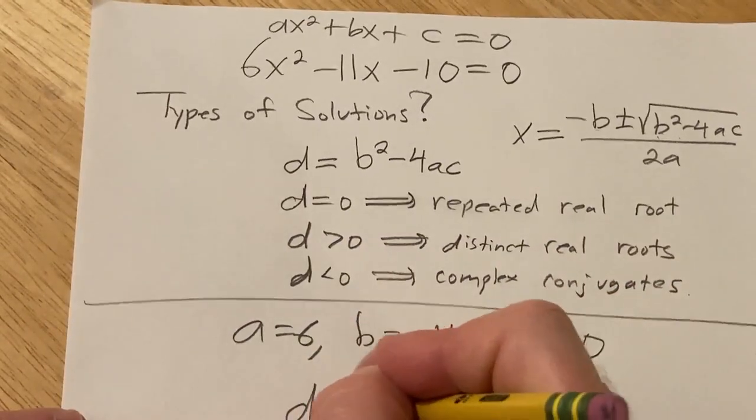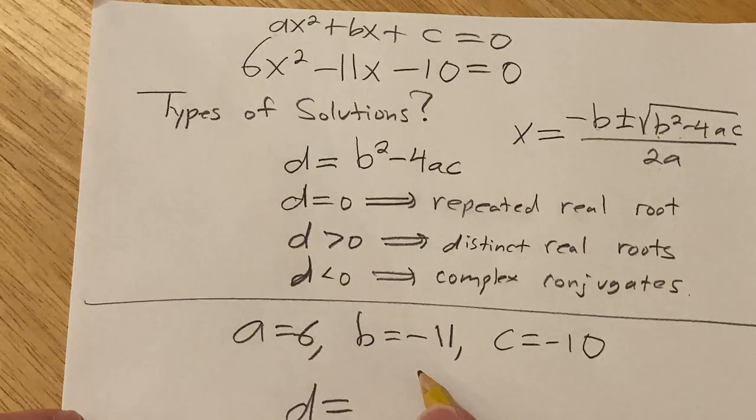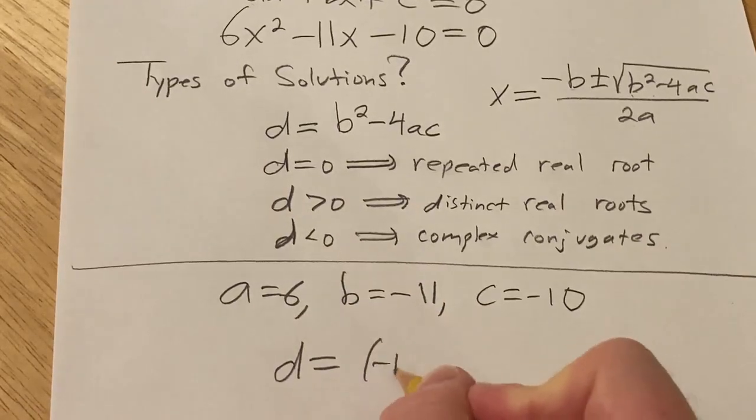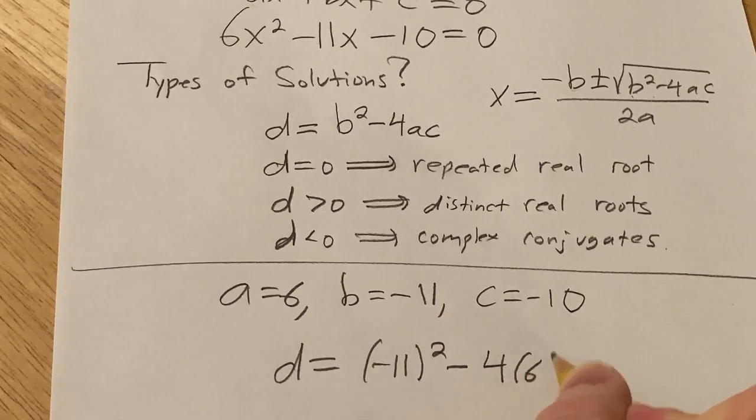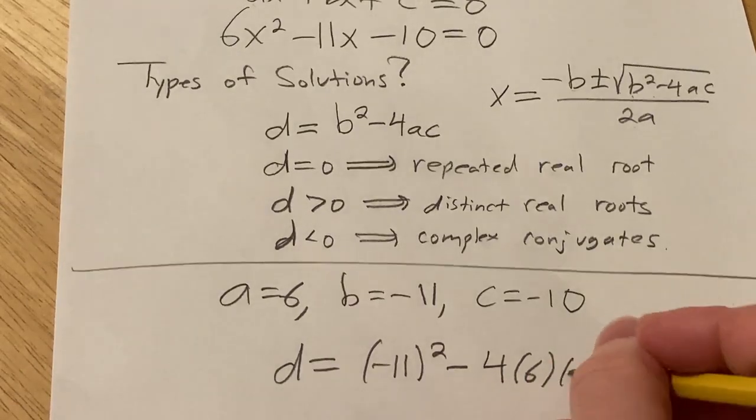So now we're going to look at d. So it's b squared, so it'll be negative 11 squared minus 4, a is 6, and then c is negative 10.